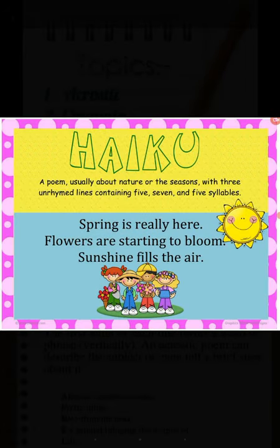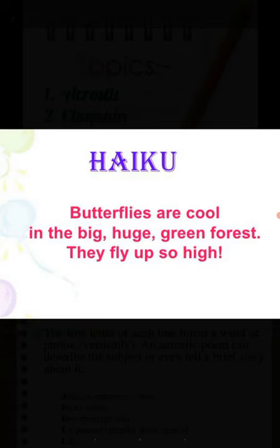Number 5 is haiku. Haiku is a type of poetry which originated from Japan. These poems feature three lines of a short length which don't rhyme. It traditionally evokes images of the natural world. Basho is usually credited as the most influential haiku poet, who popularized the form in the 17th century. Examples: Spring is really here. Flowers are starting to bloom. Sunshine fills the air. Butterflies are cool in the big huge green forest. They fly up so high.